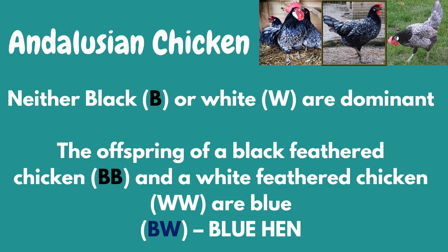Another example is in Andalusian chickens. Neither black nor white are dominant. The offspring of a black-feathered chicken and a white-feathered chicken are blue. This concept in genetics is called co-dominance, wherein both dominant alleles are expressed. Another example of co-dominance is in ABO blood typing, which will be discussed more in the topic of multiple alleles.